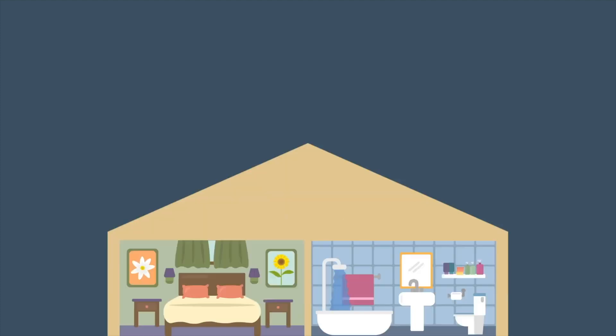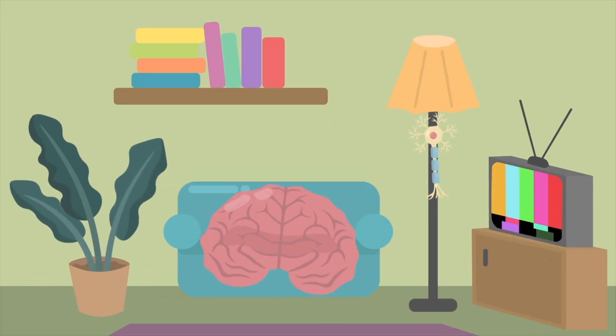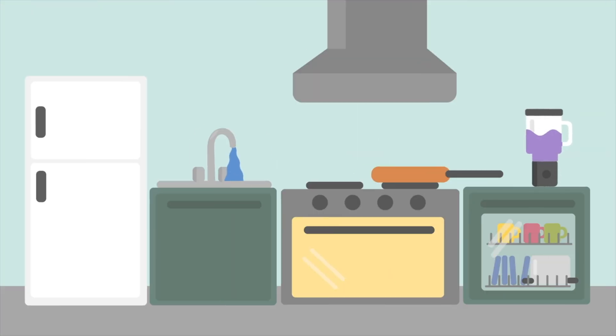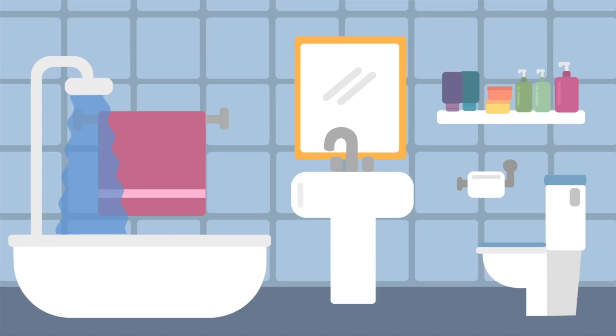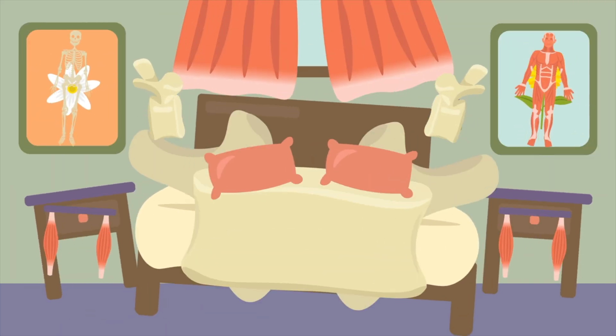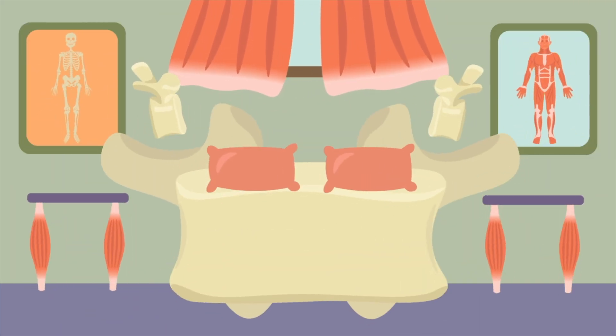Imagine your house as your memory palace, where the brain is the living room, the digestive system is the kitchen, the urinary system is the bathroom, and the bedroom is the musculoskeletal system. It would certainly be a creepy house, but it would certainly help you remember things later.